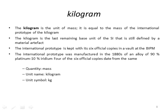The kilogram, the unit of mass, is equal to the mass of the international prototype of the kilogram. It's the last remaining base unit of the SI that is still defined by a material artifact — physical material. It's kept with six official copies in a vault at BIPM in Paris, France. Since the late 1880s, this international prototype has been made of an alloy: 90% platinum and 10% iridium.